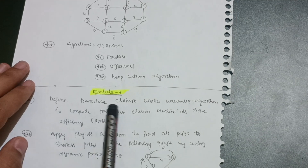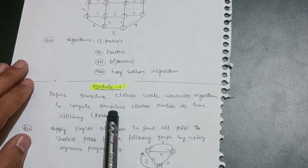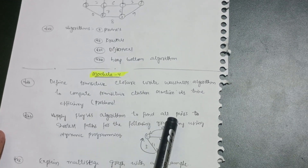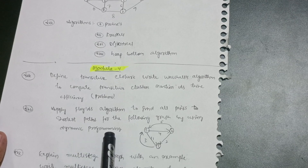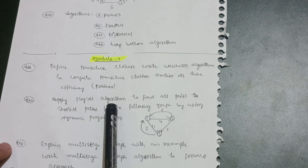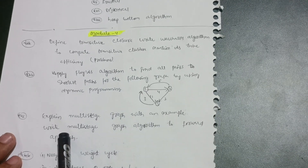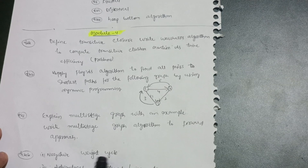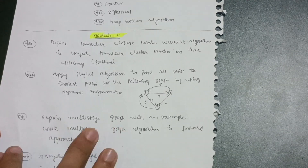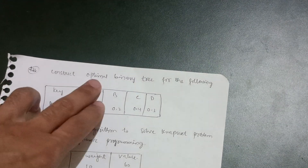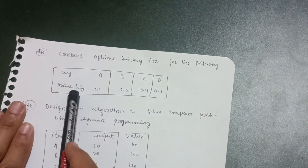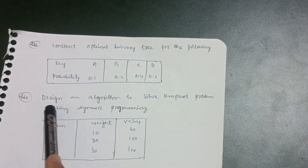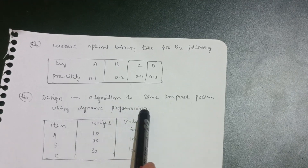Module 4: define transitive closure and write Warshall's algorithm to compute transitive closure, mentioning its time efficiency. Apply Floyd's algorithm to find all-pairs shortest paths for a given graph using dynamic programming. Explain multi-stage graph with an example and write the forward approach algorithm. Also cover negative weight cycles and the advantage of optimal binary search trees. Construct an optimal binary search tree for keys A B C D with probabilities 0.1, 0.2, 0.4, 0.3.